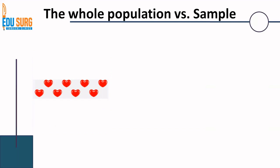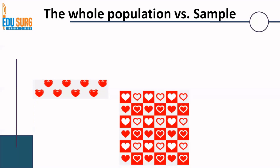Here you can see you need to study the whole population. Now suppose we select only these hearts — these two rows are the only hearts we select as a sample. Even then, this is a representative of the whole population. Because the population is homogeneous, the sample size can be small and the sample can still be representative of the population.